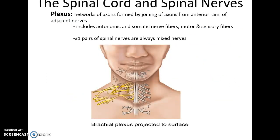Plexuses are networks of axons formed when different nerves send axons to and from each other — a mesh of interconnected anterior rami exchanging nerve fibers. Off of these plexuses come the various nerves going to different areas of the body. There are 31 pairs of spinal nerves, and they are always mixed nerves. The cervical plexus is found in the cervical region, formed primarily by cervical nerves. One named nerve that comes off of it is the phrenic nerve.